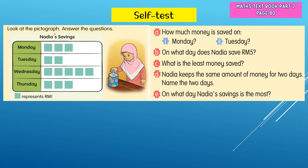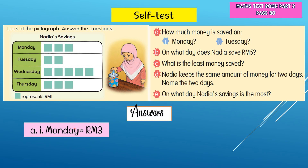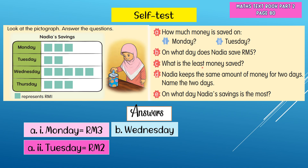Self-test: look at the pictograph about Nadia's savings over four days — Monday, Tuesday, Wednesday, and Thursday. One green square represents one ringgit. Question A: how much money is saved on Monday? Count: one, two, three — three ringgit. Question B: the money saved on Tuesday is two ringgit. On what day does Nadia save five ringgit? Count: one, two, three, four, five — Wednesday.